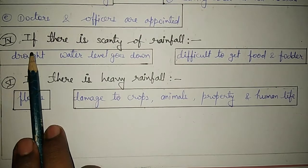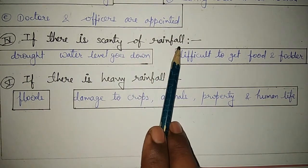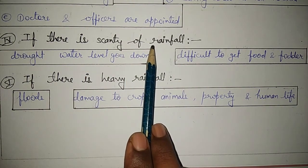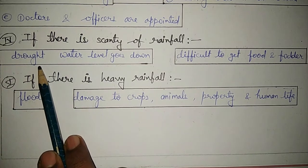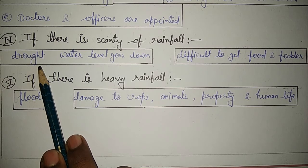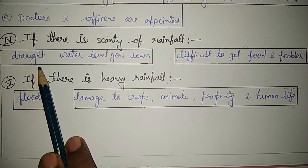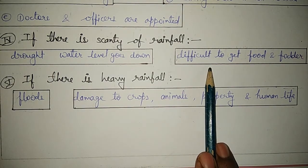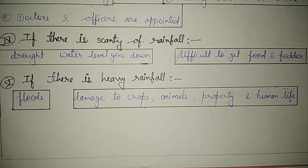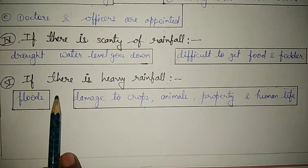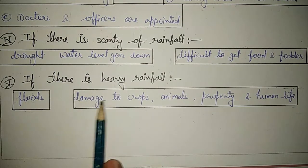The next point is: what will happen if there is a scanty of rainfall — meaning no rainfall? If there is a scanty of rainfall, this may lead to drought, and because of this the level of water in ponds and wells would go down and some may even dry up. In drought conditions it is very difficult to get food and fodder, making it a very big problem.